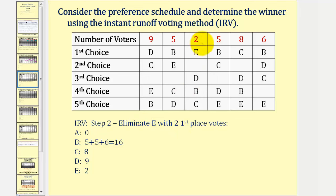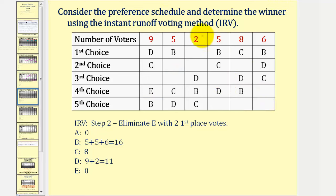We eliminate candidate E, who has 2 first place votes. After deleting E from the table, notice how these 2 votes are now assigned to candidate D. So A has 0, B has 16, C still has 8, but now D has 11 votes, and E has 0.